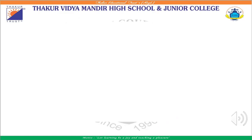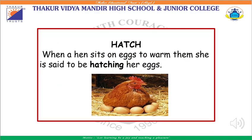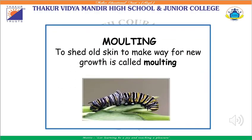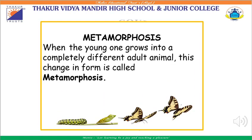We also learned many new words in this chapter. The first new word was hatch — when a hen sits on eggs to warm them, she is said to be hatching her eggs. The next word was molting — to shed away old skin to make way for new growth is called molting. Then we also saw metamorphosis — when the young one grows into a completely different adult animal, this change in form is called metamorphosis.